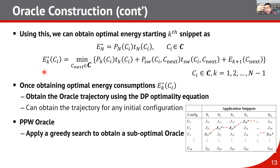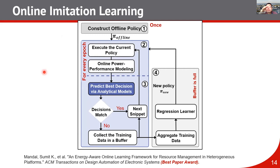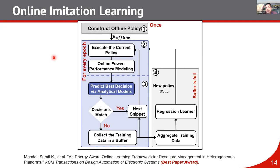So far I have discussed oracle construction. Next I will discuss the imitation learning process. The first step is to construct the offline policy by obtaining the oracle and training a policy — perhaps a decision tree or linear regression. The offline policy is then executed on-chip. While it makes decisions on-chip, we track the optimal decision simultaneously, and if they don't match, we retrain the policy. This is how our overall online imitation learning framework works.